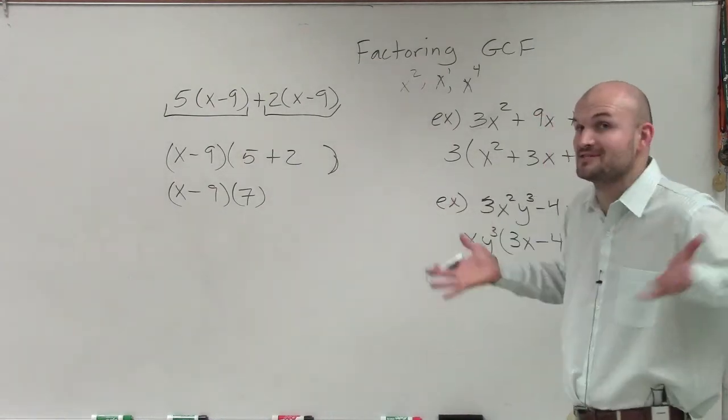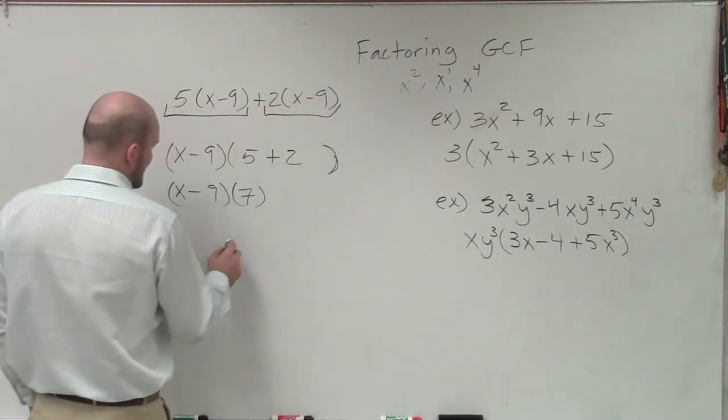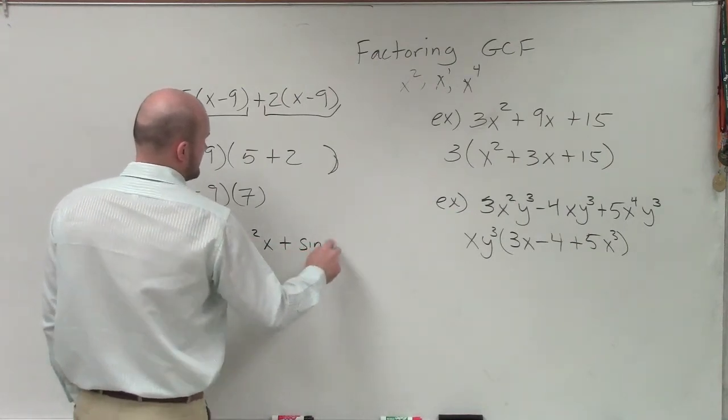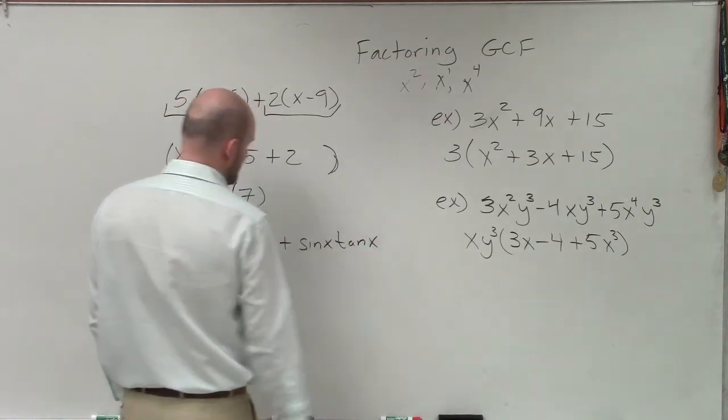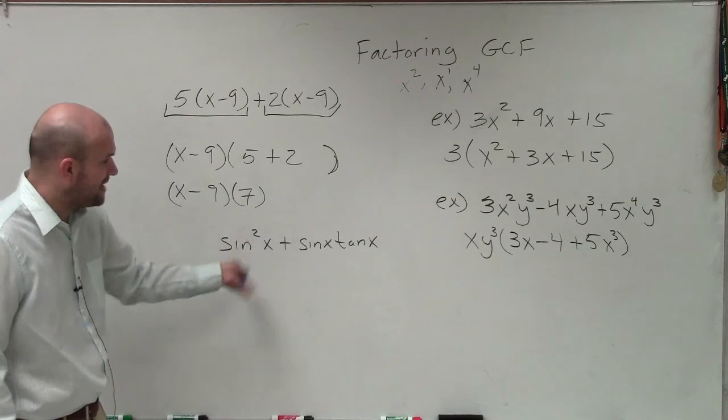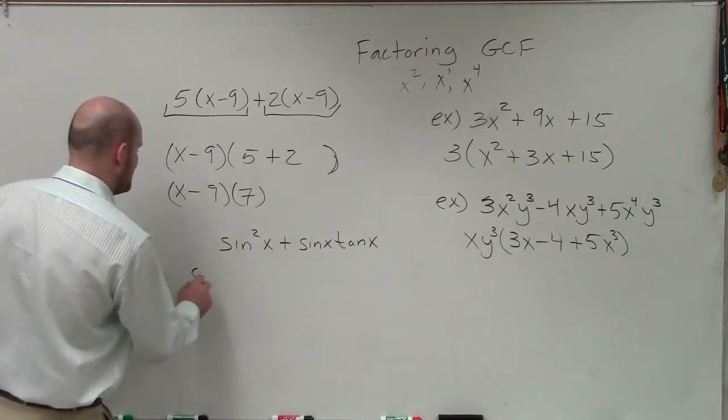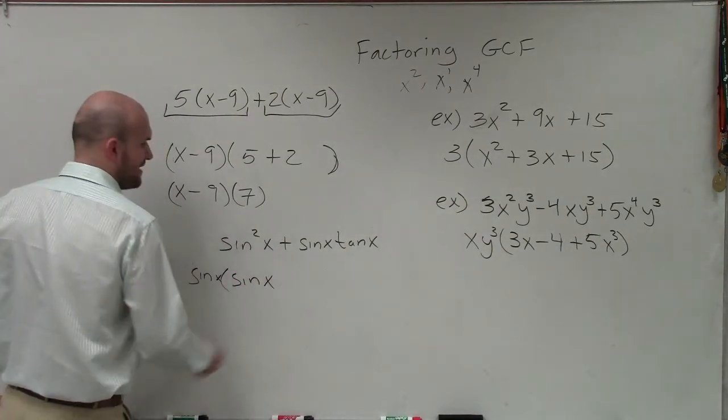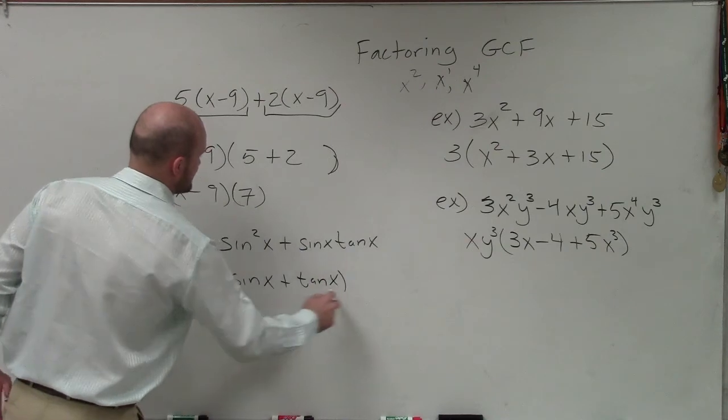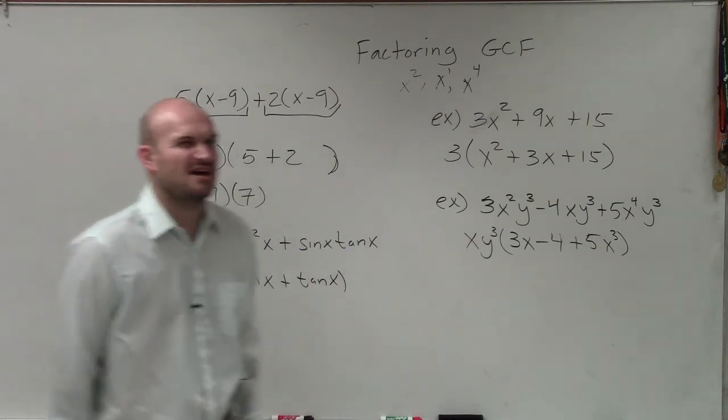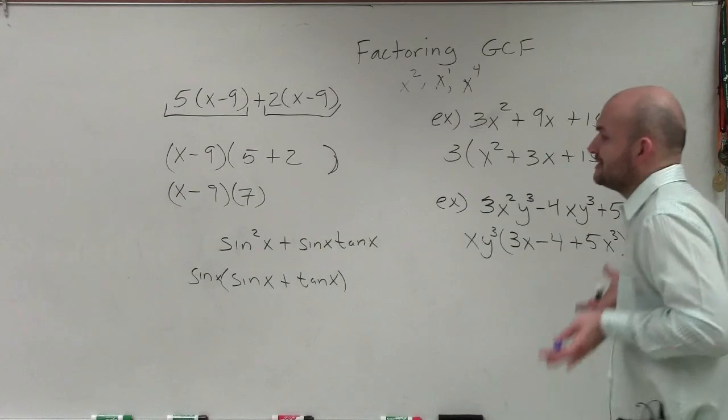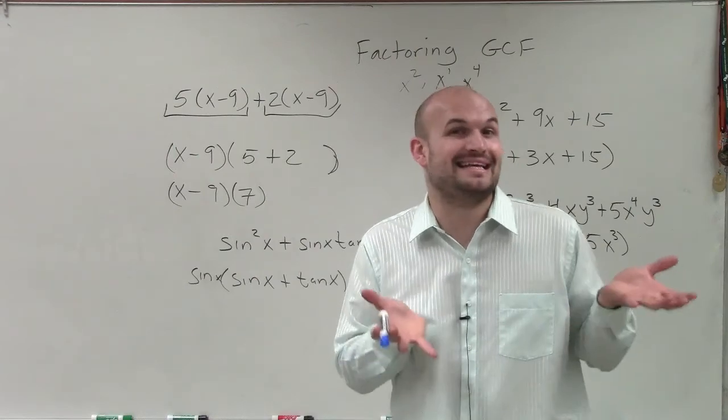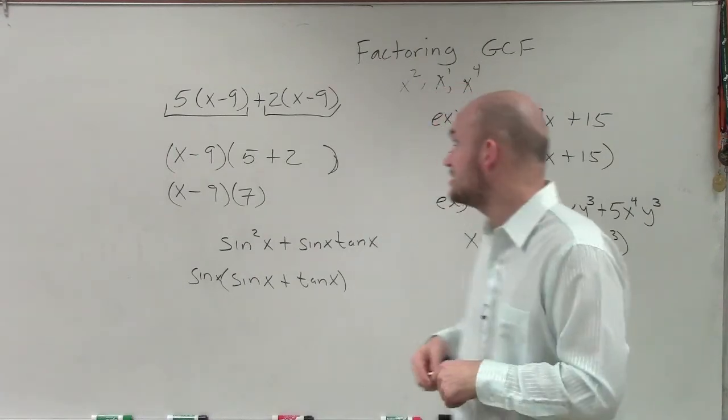And you could even work it in with some things that don't even make so much sense to you. Let's say I had a sine squared of x plus sine of x times tangent of x. In this case, you can see that, oh, well, they both share a sine. So you can factor out a sine of x. By factoring out a sine of x, you're only left with one more sine of x plus a tangent of x. So that's a little bit more advanced example for some of you. But when looking at the factoring the GCF, you just want to find out what terms they share in common that you can divide evenly out of each term.